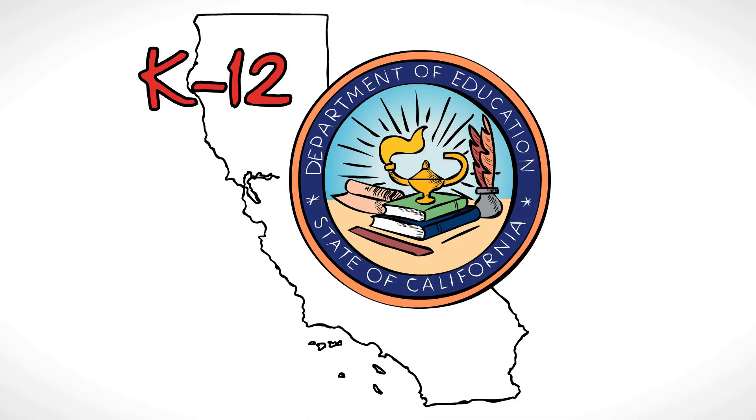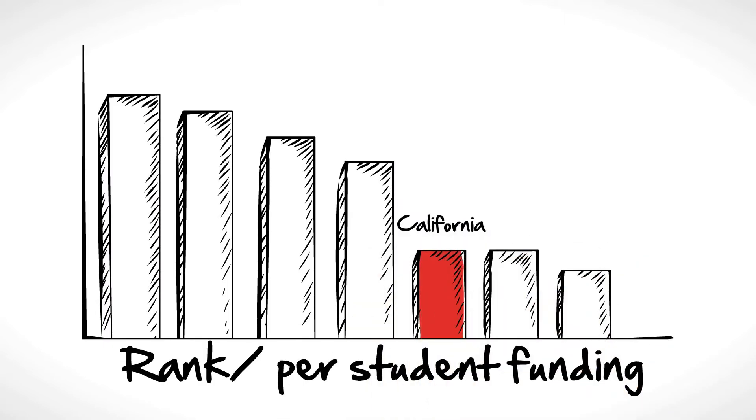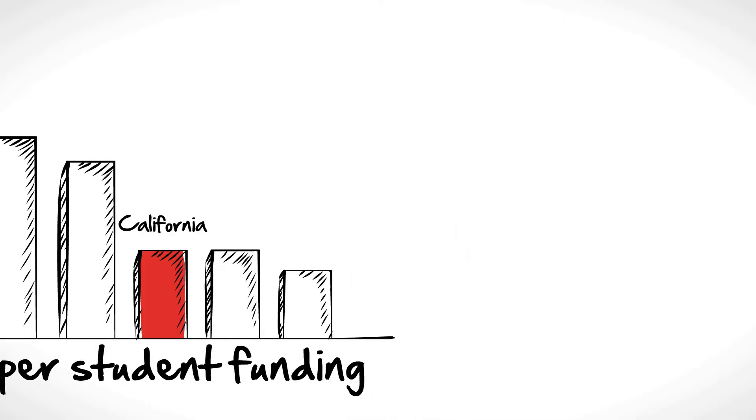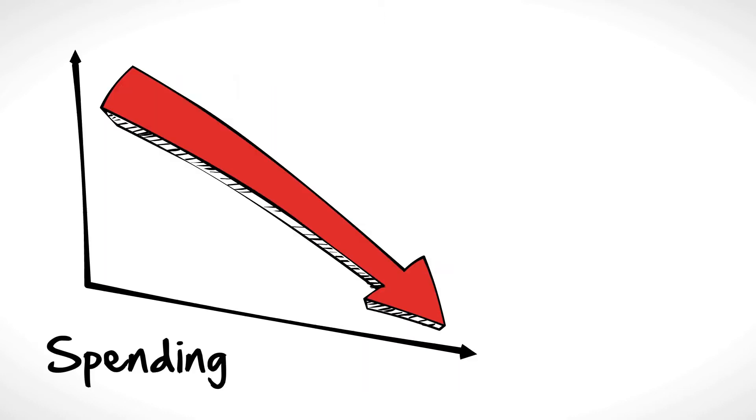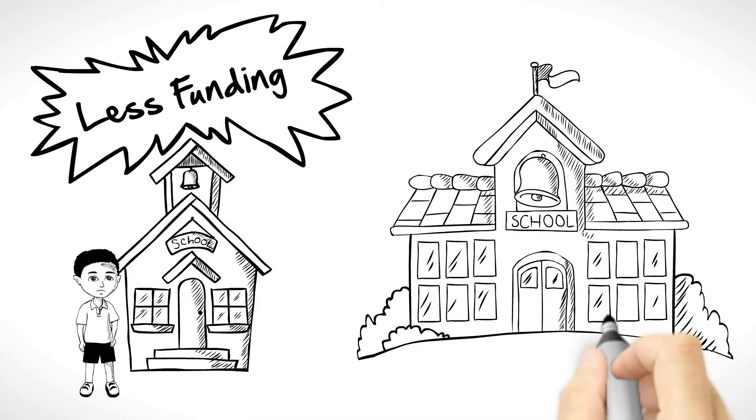K-12 education in California is in crisis. Not only does California rank near the bottom in per-student funding, and spending has been drastically cut, but students in low-income schools receive less funding than kids in well-to-do neighborhoods.